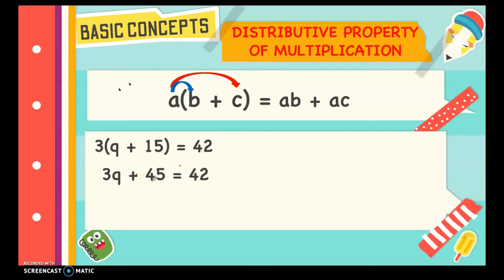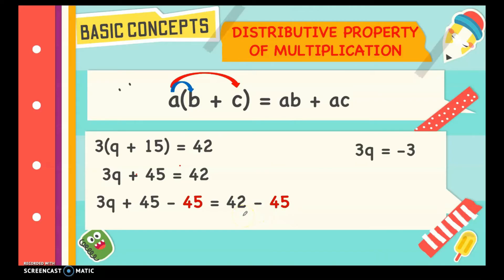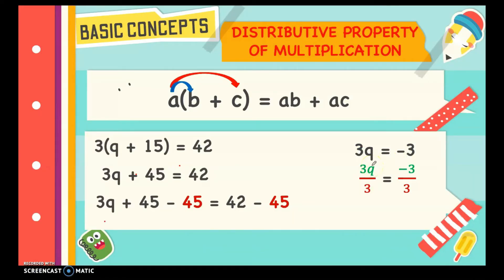To eliminate the 45, we subtract 45 from both sides and simplify. So 45 minus 45 equals 0, and 42 minus 45 equals negative 3. The remaining expression is 3q equals negative 3. Then we divide both sides by 3 to eliminate the 3 beside the variable. So 3 divided by 3 equals 1, leaving q, and negative 3 divided by 3 equals negative 1. Therefore q equals negative 1.